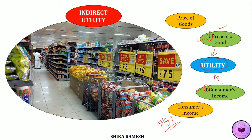The utility is derived not from the consumption of the product itself, but from the consumer focusing upon the price of the good as well as his income. Whereas direct utility means that the features or characteristics of the product are what give utility to the consumer.